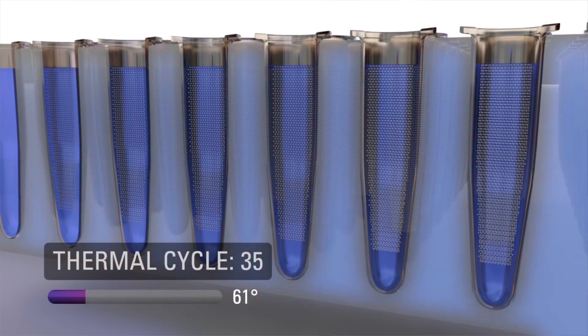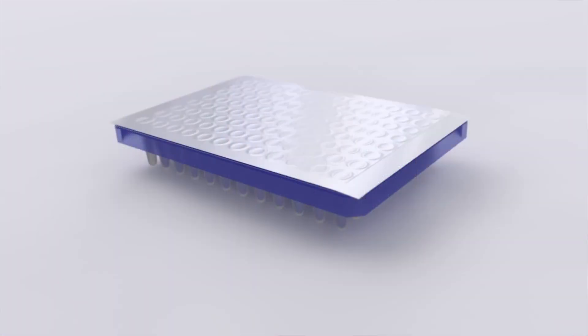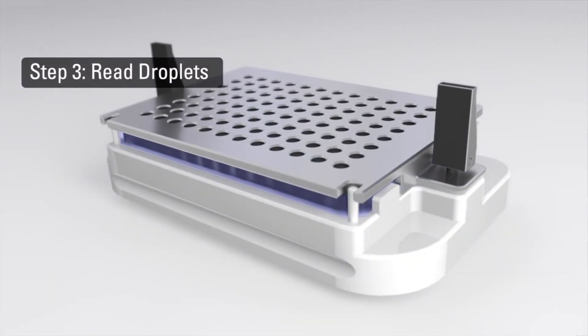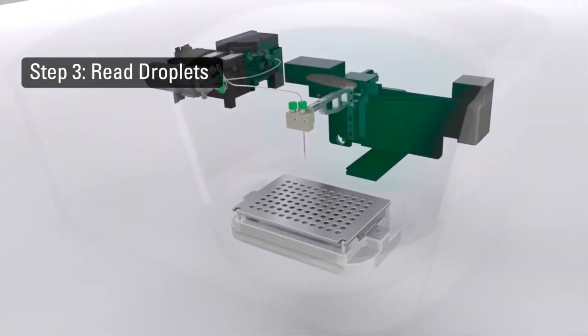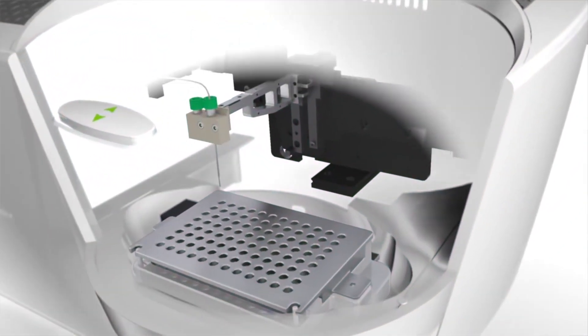In digital PCR, you actually have 20,000 droplets that you're actually looking at. The difference also in digital PCR is it actually partitions your sample in an oil-immersion droplet. And this droplet is counted, every single droplet is counted with laser, and it counts positive and negative droplets.